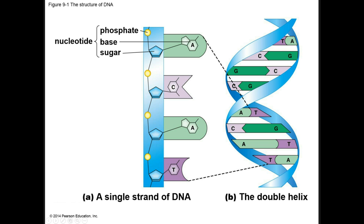When a cell divides, it replicates its DNA to make two identical copies and gives each daughter cell one of the two copies. This is why the daughter cells will have the same number of chromosomes as the parent cell after mitosis is complete.